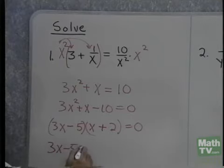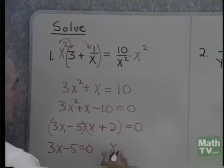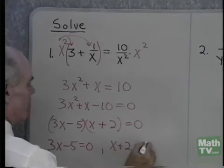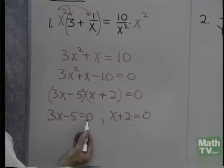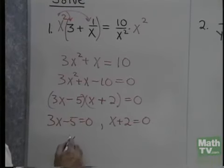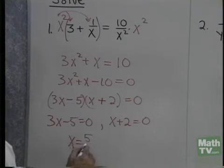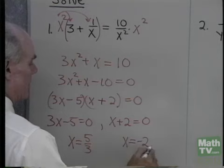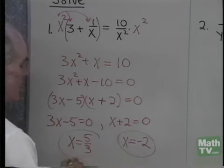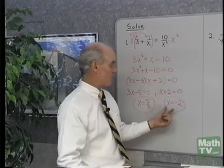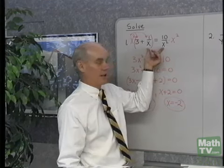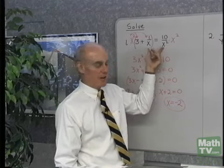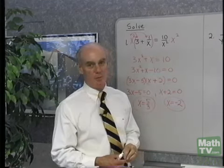So I set 3x minus 5 equal to 0, and I set x plus 2 equal to 0. Here I add 5 to both sides, then divide by 3. I end up with x equals 5 thirds. Here I add negative 2 to both sides, x is equal to negative 2. Notice that neither one of those two numbers makes anything in the original equation undefined, so those are my two solutions. I'm going to keep both of them.